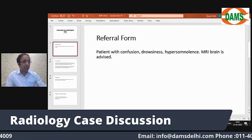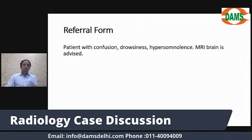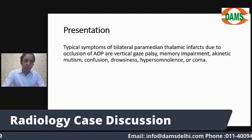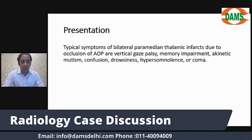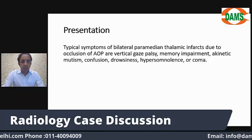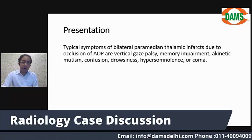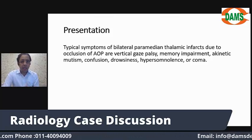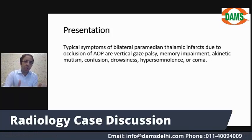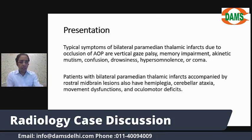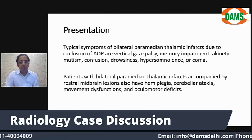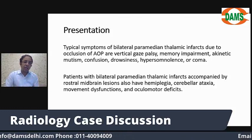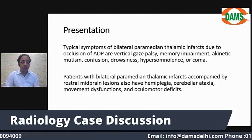Going back to the clinical presentation: confusion, drowsiness, and hypersomnia. We need to understand how a patient with artery of Percheron infarction presents. If you have only thalamic infarcts, the typical presentation includes vertical gaze palsy, memory impairment, akinetic mutism, confusion, drowsiness, coma, and hypersomnia — as seen in our patient. If there are bilateral paramedian thalamic infarcts along with rostral midbrain lesions, you can additionally have hemiplegia, cerebellar ataxia, movement disorders, and ocular motor dysfunctions.